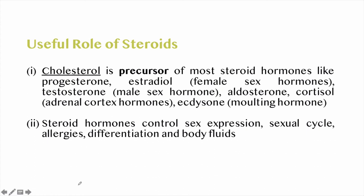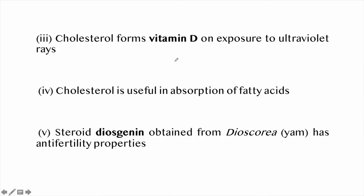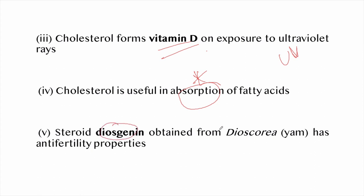Functions of cholesterol include: it is a precursor of steroid hormones — sex hormones and adrenal cortex hormones that control sex expression, sexual cycle, allergies, and differentiation. Cholesterol forms vitamin D on exposure to UV rays. It is useful in the absorption of fatty acids. Steroid diosgenin is obtained from Dioscorea (yam) and has anti-fertility properties.